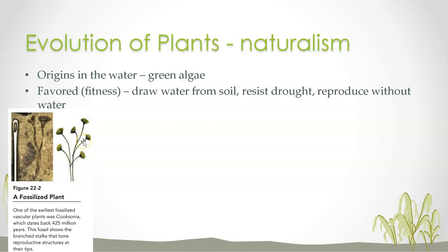From a naturalistic perspective, just learning what evolution says: plants originate in the water according to naturalistic evolution. Remember, naturalism is trying to explain life and meaning without God — everything can be explained naturally. Plants were favored fitness-wise when they could draw water from the soil. So when plants evolved the ability to draw water from the soil, resist drought, and reproduce without water, this was an increase in fitness. Here's a fossilized plant picture from your textbook — Cooksonia — which dates back 425 million years.